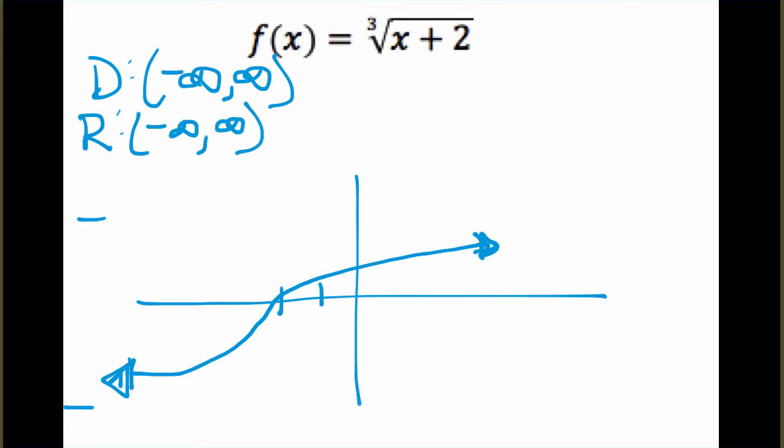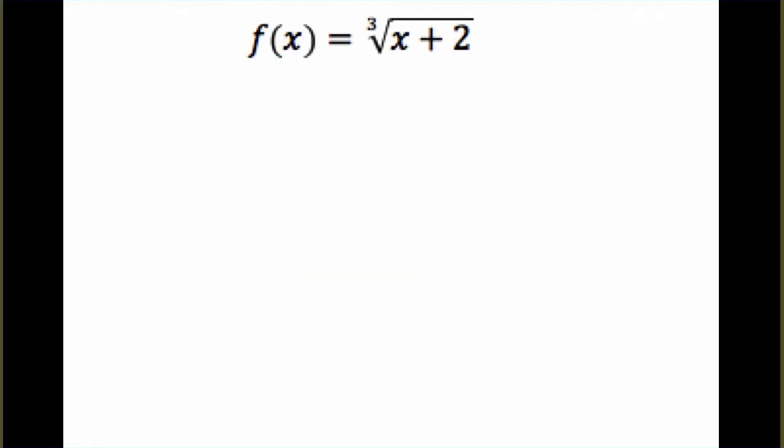Our range is actually the same as the domain. This graph passes both our horizontal and our vertical line test. So it is one-to-one, which means we can find an inverse. Our next step is going to be to find the inverse. Here's a way that you can find the inverse algebraically if you don't like using the idea of the opposite operation in the opposite order.